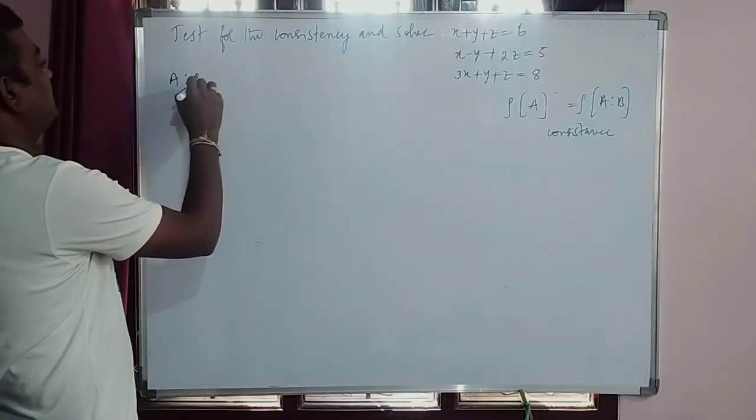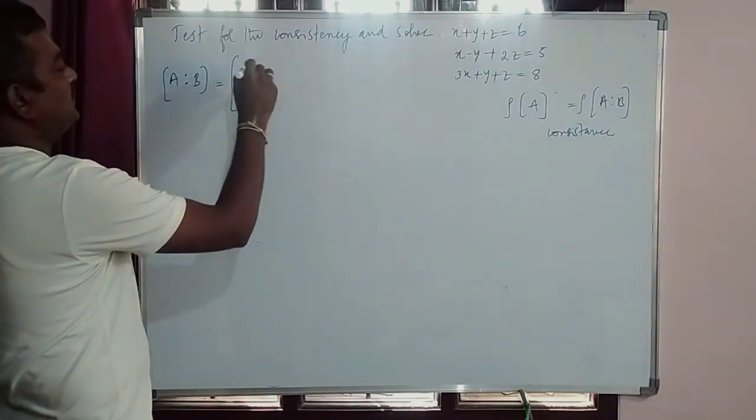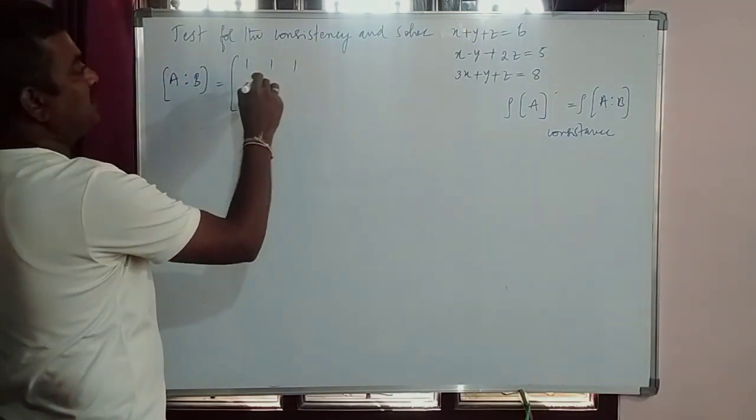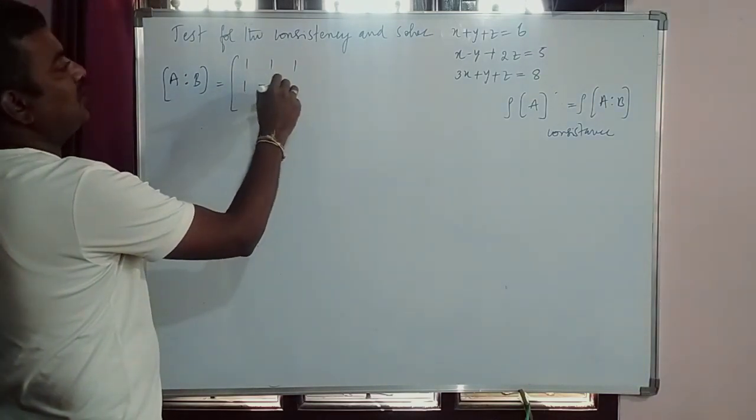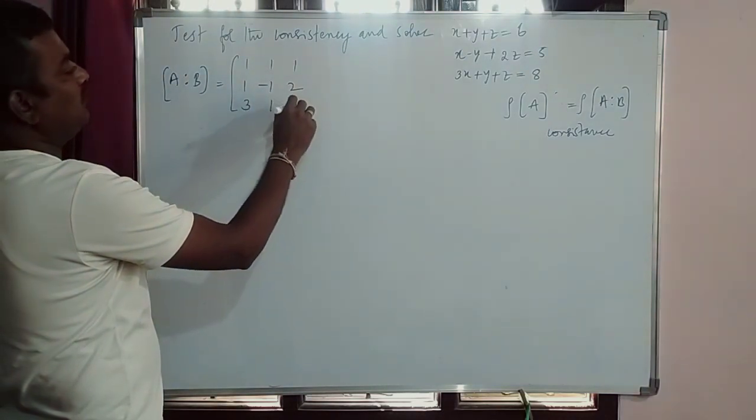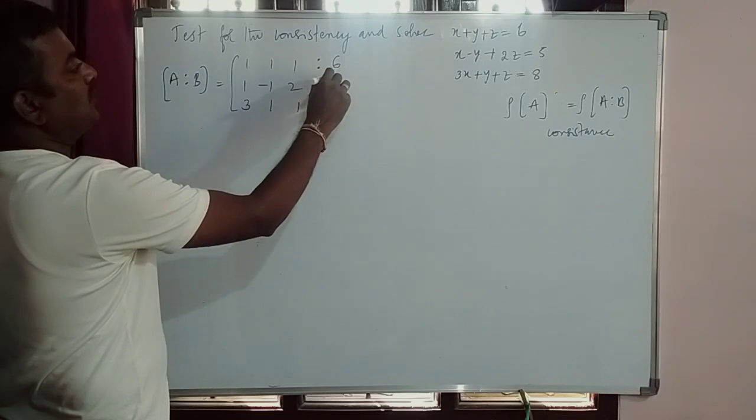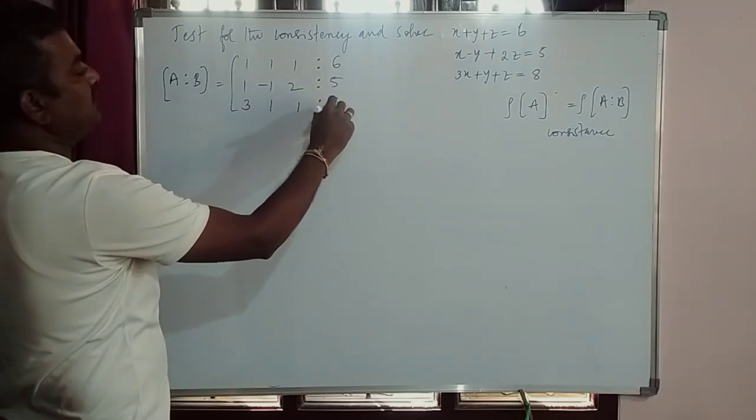To find out rank, I am writing in augmented matrix format. So A augmented B is equal to, the coefficients are 1, 1, 1 augmented with 6; 1, -1, 2, 3 augmented with 5; and 1, 1, -1 augmented with 8.